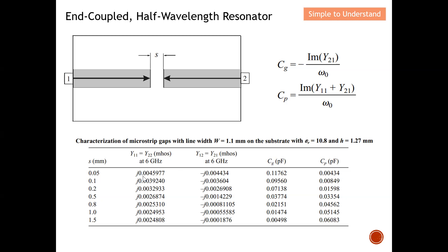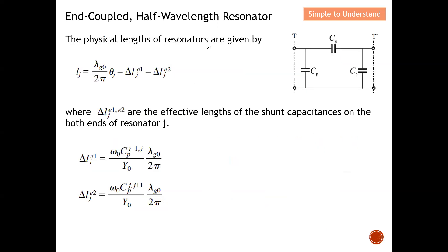I then separate the gap to 0.1 mm, run the simulation again, and obtain the imaginary parts of Y11 and Y12. These two sets of values allow me to calculate the series and parallel capacitors. I continue populating this table by varying the gap, and later I can do a simple interpolation to design the bandpass filter using capacitive-coupled resonators.